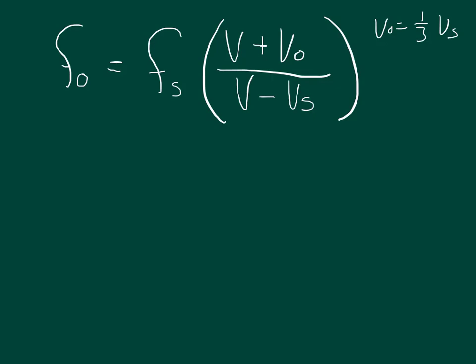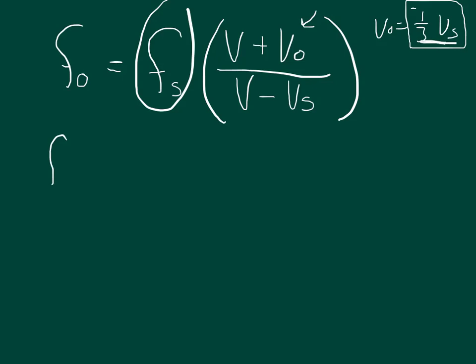Whenever the velocity of the source is moving away from the observer, the velocity of the source is negative. Whenever the velocity of the observer is moving toward the source, the velocity of the observer is positive. So this has to be a positive number and this has to be a negative number. In order to make that fit, we make this negative one-third, so the velocity of the observer is negative one-third the velocity of the source.